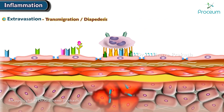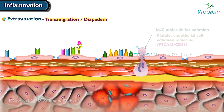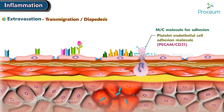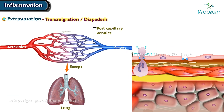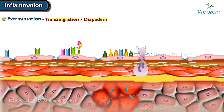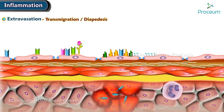Now let's move on to transmigration, or diapedesis. This is characterized by the transmigration of leukocytes across the endothelium. The most common molecule for adhesion is the platelet endothelial cell adhesion molecule, also known as PECAM or CD31, present on both endothelium and leukocytes. Diapedesis occurs in post-capillary venules, except in the lungs where it also occurs in the capillaries. After traversing the endothelium, leukocytes pierce the basement membrane, probably by secreting collagenases, and enter the extravascular tissue. Typically, the vessel wall is not injured during leukocyte transmigration.